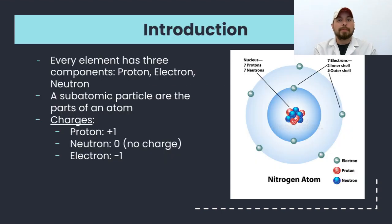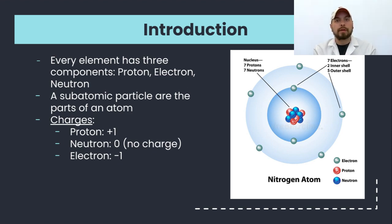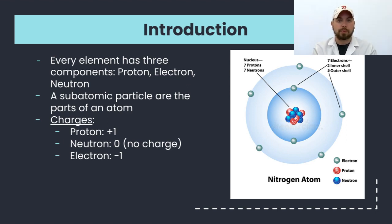First thing to keep in mind is that we have talked about three subatomic particles: protons, neutrons, and electrons. Of these three, two of them have charges. Protons have a plus one charge, and electrons have a minus one charge. When an atom is in its normal state, the number of protons and electrons are equal.